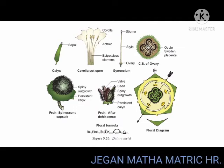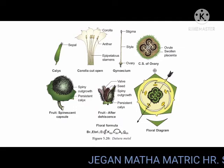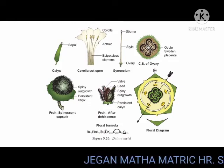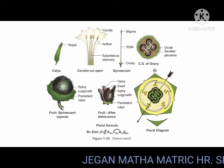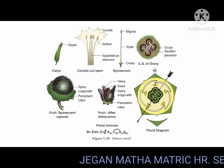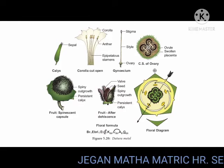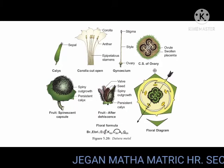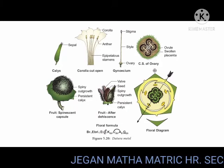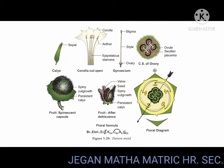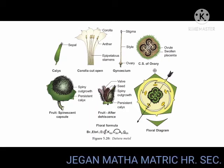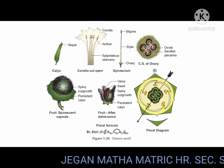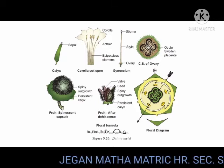Calyx: sepals 5, green, synsepalous — sepals are fused — showing valvate aestivation. Calyx is mostly persistent, that is, attached after fruiting also. Odd sepal is posterior in position.